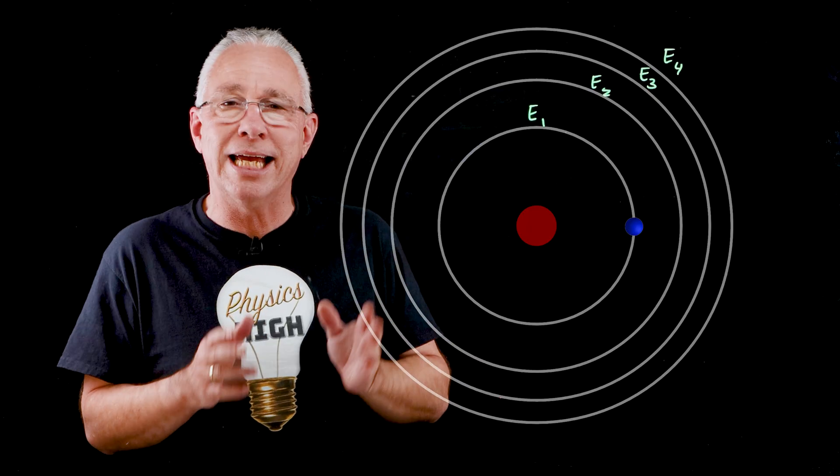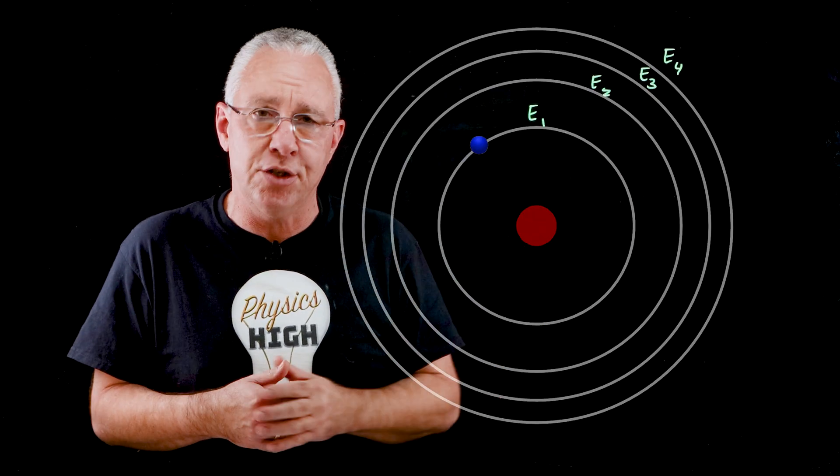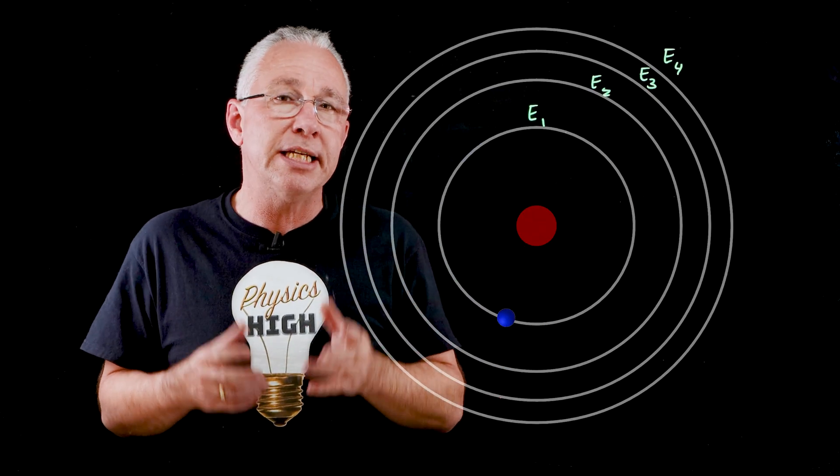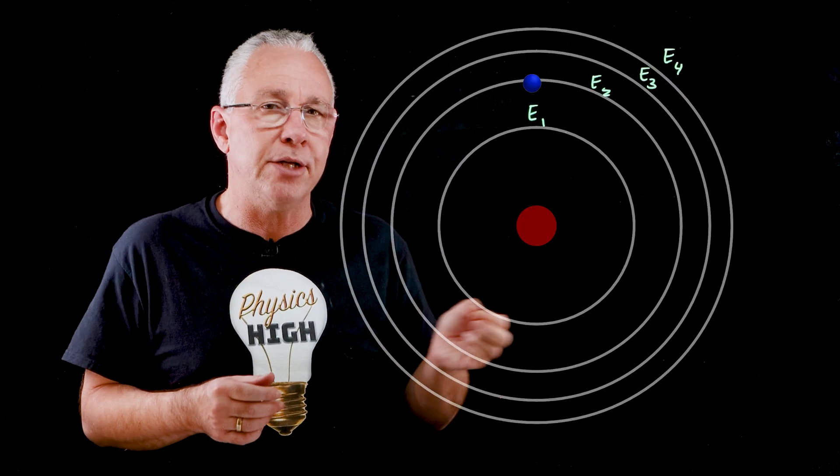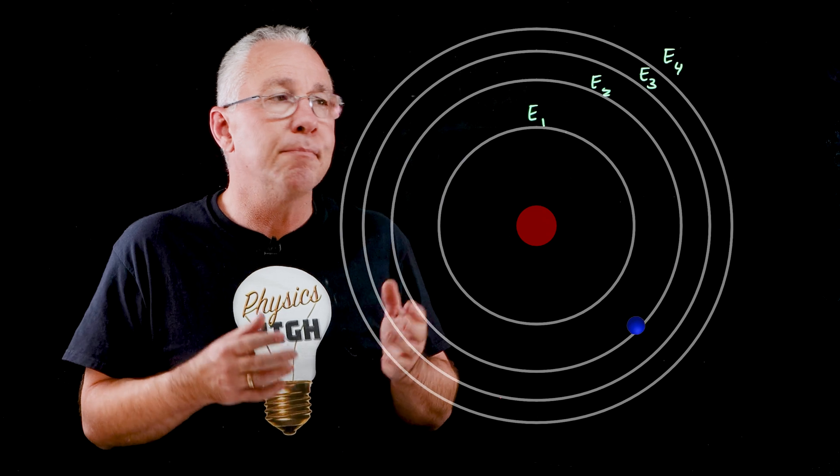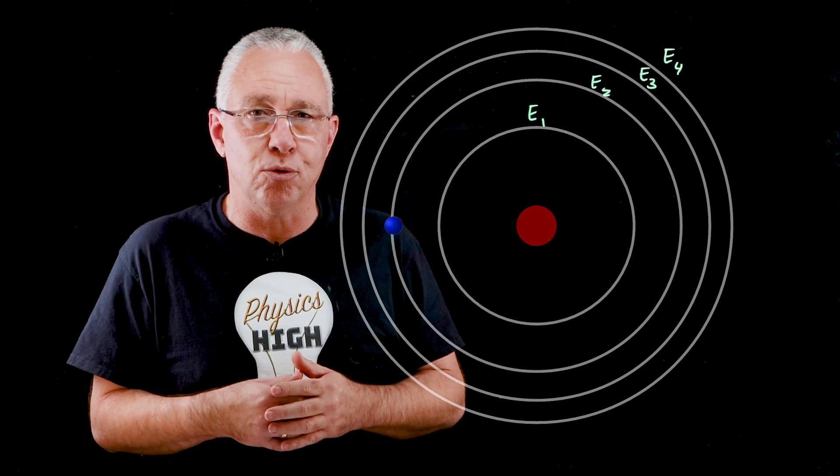Bohr proposed that an electron can jump to another energy level as long as it receives energy of a very specific amount, namely E equals hf. The energy required must be the difference between those two energy levels.